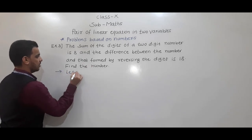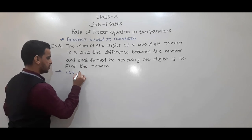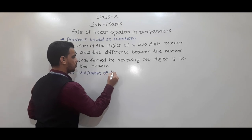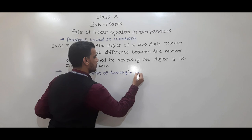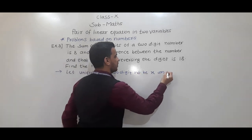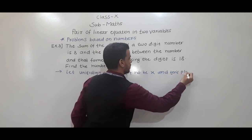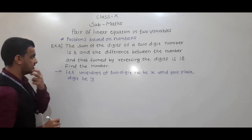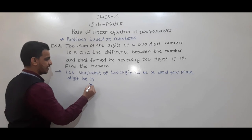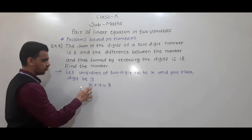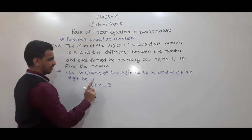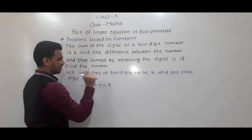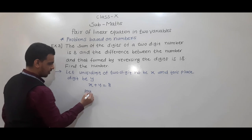Let the units digit of the two-digit number be x and the tens digit be y. From the first condition, sum of the digits is 8, so we can write directly x plus y equals 8. This is equation 1. For the second condition: if units digit is x and tens digit is y, the number is 10y plus x.